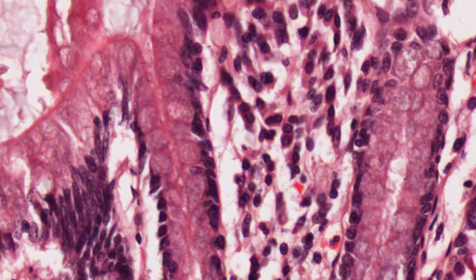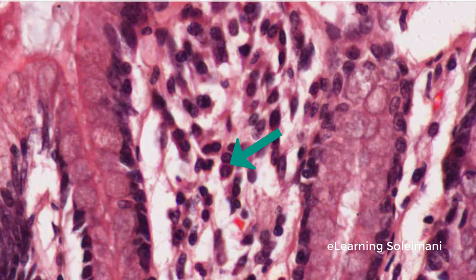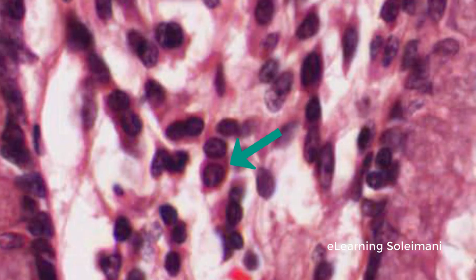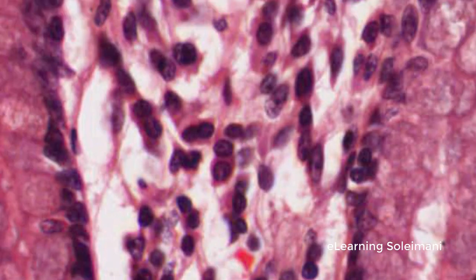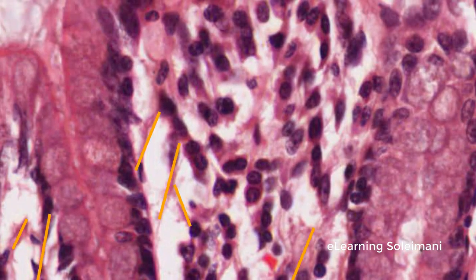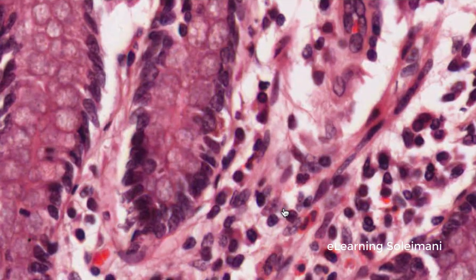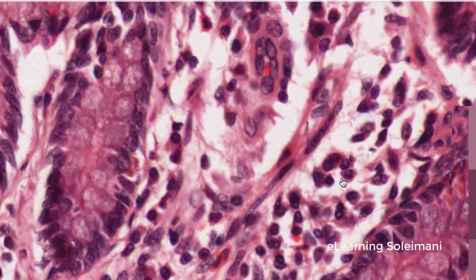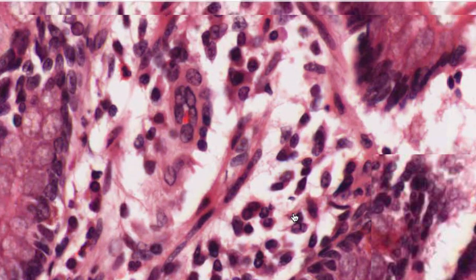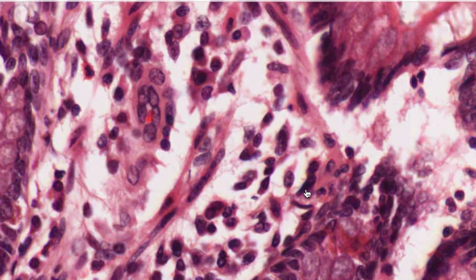The purpose of this slide is demonstration of plasma cells with eccentric nuclei and the clock-face appearance, along with fibroblasts and scattered collagen fibers. Sometimes smooth muscle cells can also be seen.